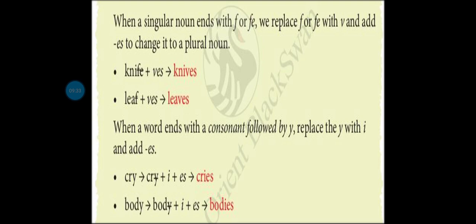Also: live → lives. When a word ends with a consonant followed by y, replace y with i and add es. Agar koi bhi word hai jiske last mein y aata hai, to y ko remove karke uske badle i-e-s add karenge. For example: cry — c-r-y — last mein y hai, so we cut the y and add ies: cries. Okay, understand? Samajh mein aaya — rules of plural nouns.